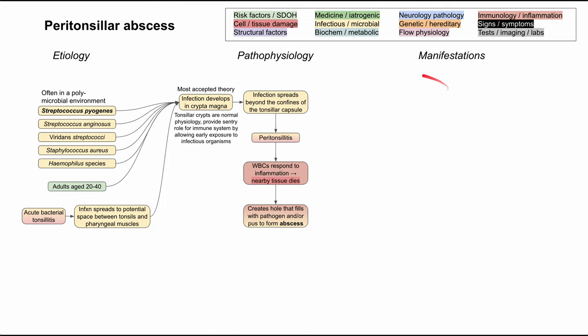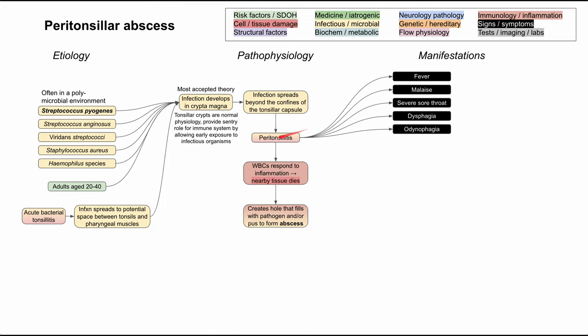Now let's get into the manifestations. These are the manifestations that come from tonsillitis and peritonsillitis: you can have fever, malaise, a severe sore throat, dysphagia, and odynophagia — that's difficulty swallowing and pain with swallowing. These are also symptoms of tonsillitis, so they're not exactly specific for peritonsillar abscess.